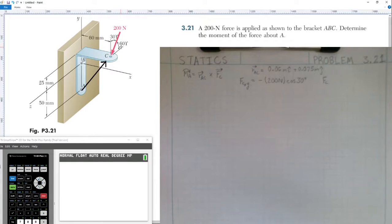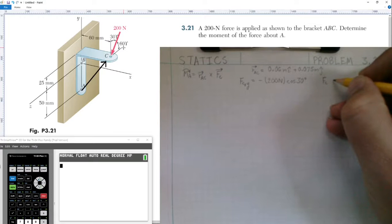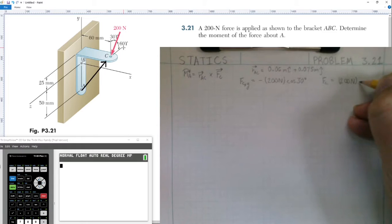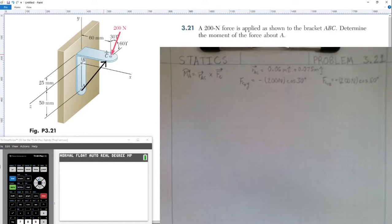Force C in the z-direction would similarly be 200 Newtons times the cosine of its angle between its axis, which is 60 degrees. This is a positive force in the z-direction because it's coming out of the page, acting in the positive z-axis direction.